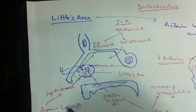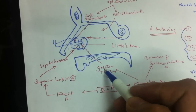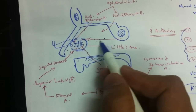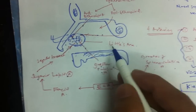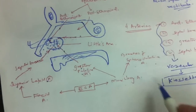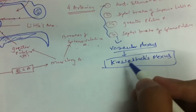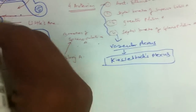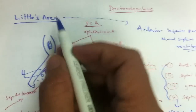At Little's area, the four arteries — the anterior ethmoidal artery, the septal branch of the superior labial artery, the greater palatine artery, and the septal branch of the sphenopalatine artery — anastomose with each other and make a vascular plexus called Kiesselbach's plexus.